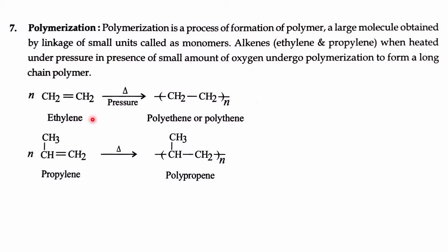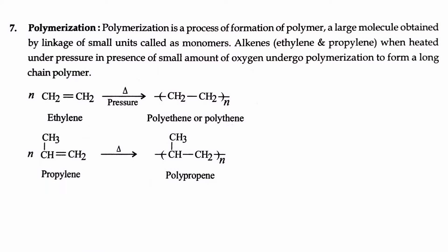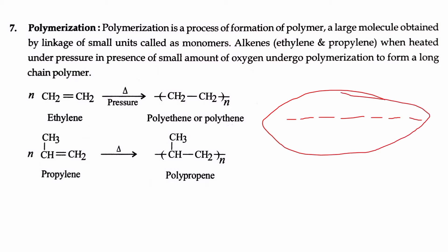These molecules get added to one another — one alkene adds to another alkene, which adds to another alkene. So all these alkenes are in a chain. One molecule adds to the next, forming a long chain. This is a polymer chain.